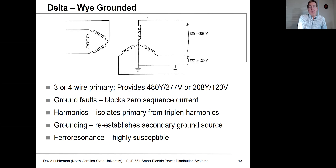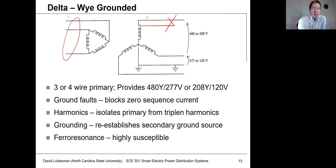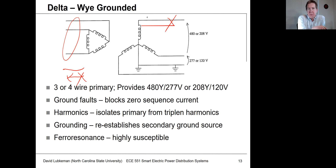Another option is a delta/Y-ground connection. The primary can be three-wire or four-wire (without using the neutral). This can also be used for providing 480 volts or 208 volts line. In this case, if you had a short circuit on the secondary, all currents must sum to zero on the delta side — so you get no zero-sequence current, meaning you would not see a ground fault current through any neutral on the primary side. This connection effectively blocks zero-sequence current, which may be good or bad depending on your application.